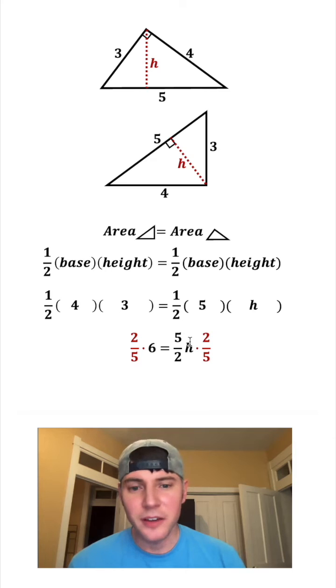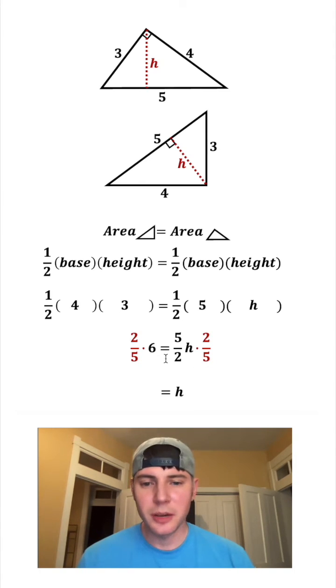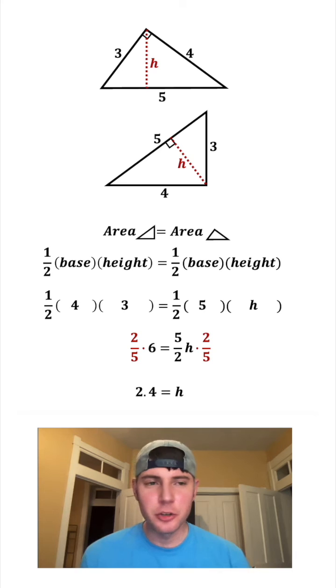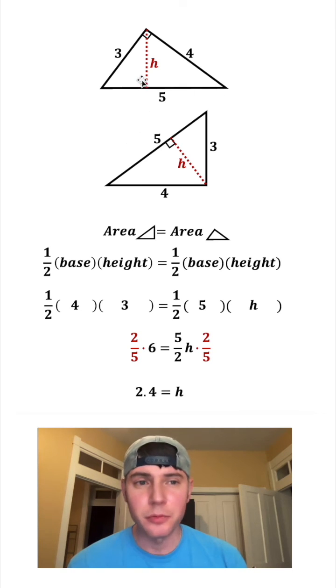This 2 cancels with this 2, this 5 cancels with this 5, giving us h on this side, and that's equal to 2 times 6, which is 12 divided by 5. So h is equal to twelve-fifths, and twelve-fifths as a decimal is 2.4. So in this 3-4-5 right triangle with the hypotenuse as the base, the height is going to be equal to 2.4. How exciting!